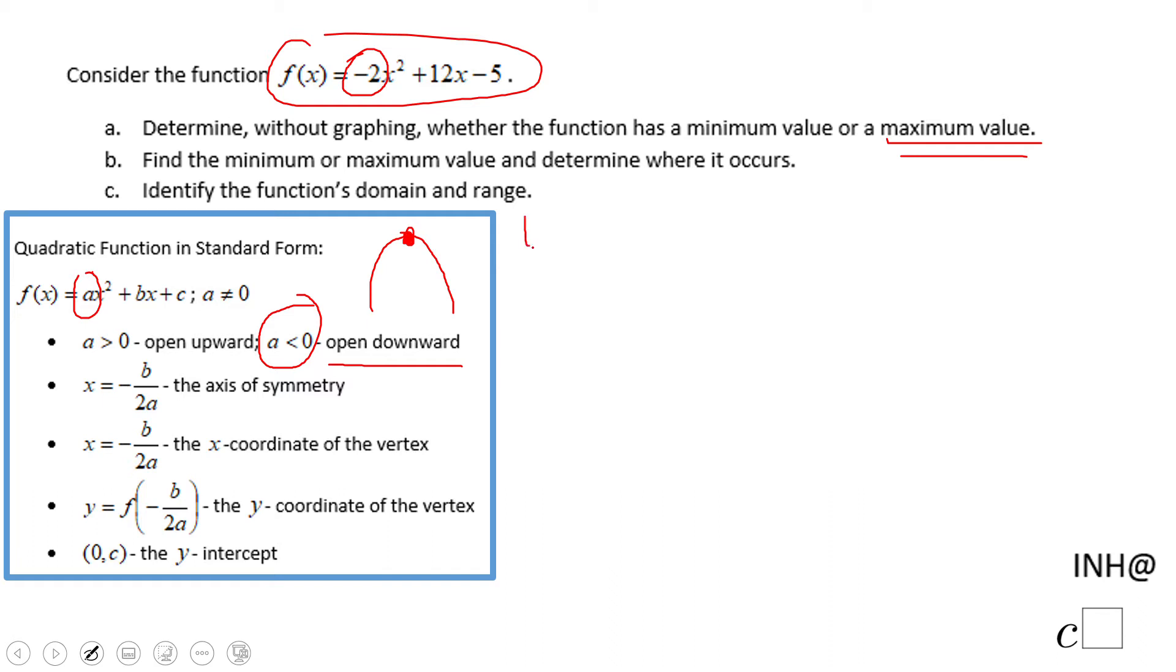Now we can go to point B, which says find the minimum or the maximum. Find the maximum value and determine where that occurs. So that means I'm going to take x equals negative b over 2a, and I'm going to plug the information in. b is 12, and a I just mentioned is negative 2. So we end up here with negative 12 over negative 4, and that will be positive 3. That is the x value of the vertex, that is where it happens.